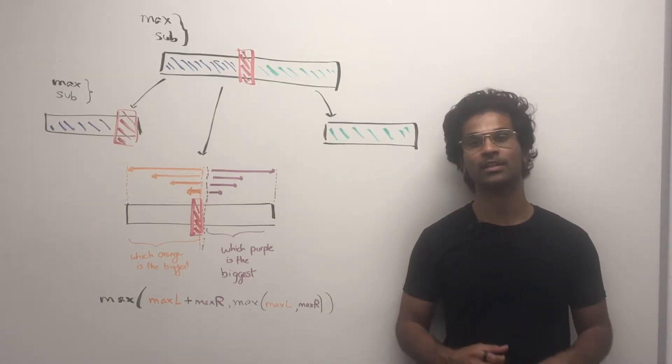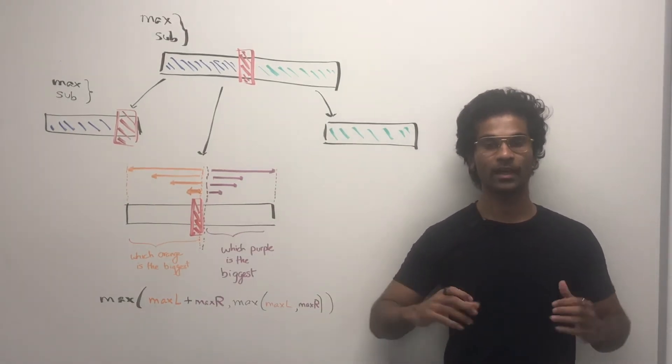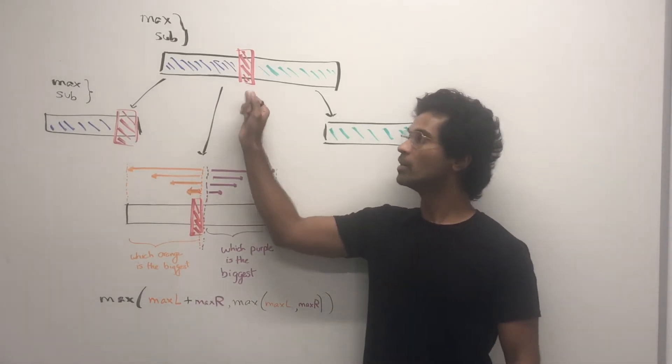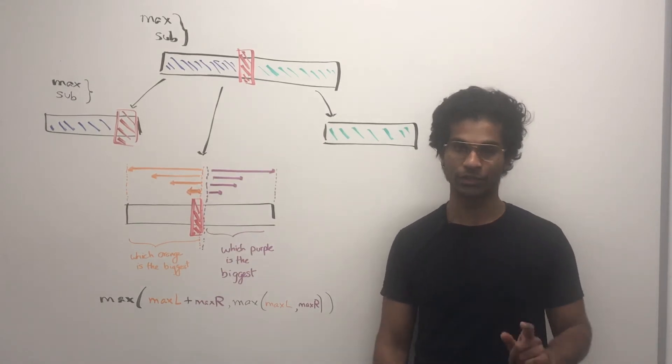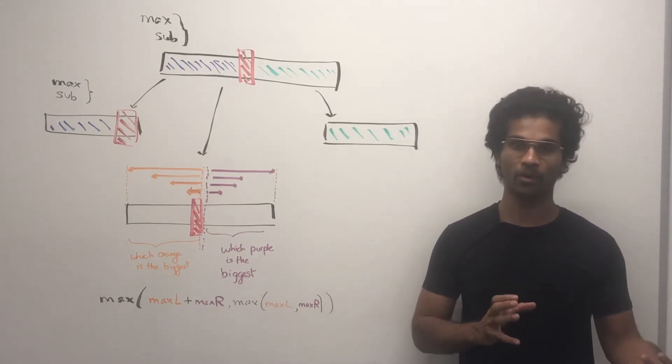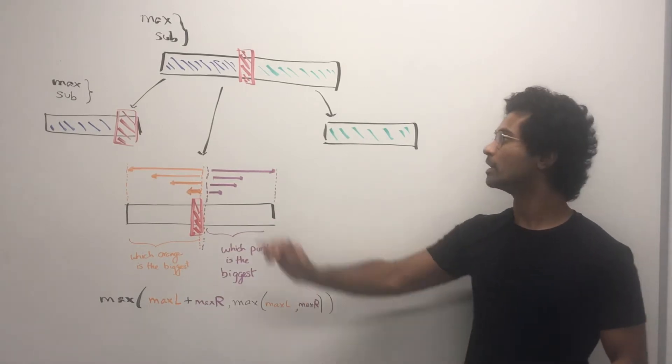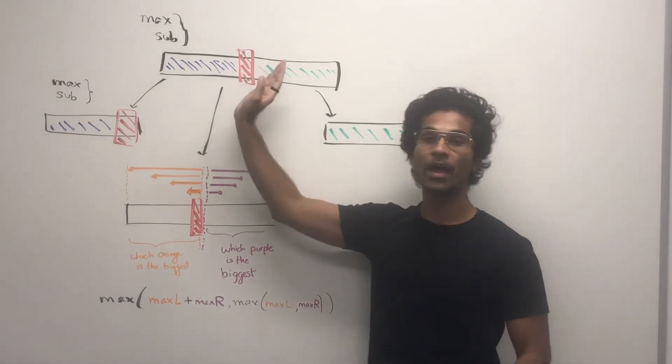This diagram represents how we're taking the array and splitting it up for our divide and conquer. So the red represents the midpoint. It's always going to be one integer and the left subarray that we use for our recursive call is going to be inclusive of the midpoint and everything to the left.